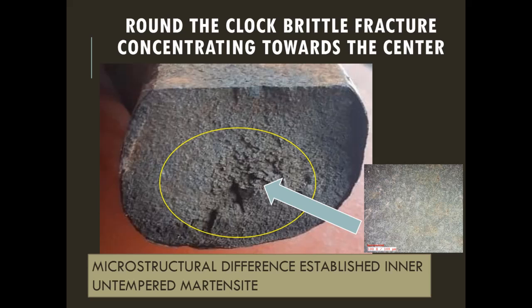Here you can see a round-the-clock brittle fracture concentrating towards the center — this is a hundred percent brittle fracture because the material is highly brittle. Tempered martensite has more toughness, but untempered (white) martensite — formed when steel is quenched rapidly from the austenitic region — is highly brittle with a hardness of around 65 RC. Hence you see this brittle fracture propagating around the entire circumference from 0 to 12 o'clock.